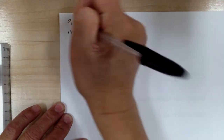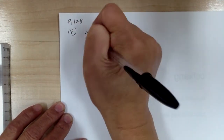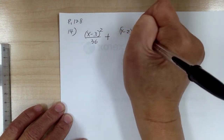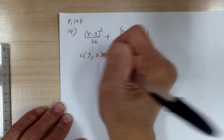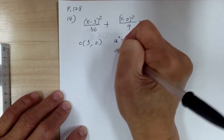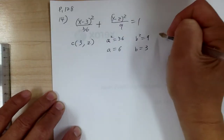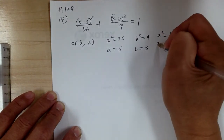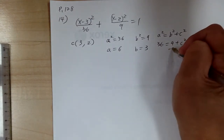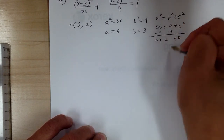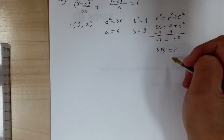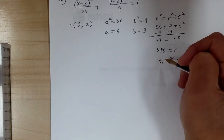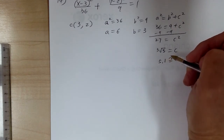Let's go to number 14. We have (x - 3)² over 36 plus (y - 2)² over 9 equal to 1. Now there's parentheses, so be careful. The center is at (3, 2). A squared equals 36, so a equals 6. B squared equals 9, so b equals 3. A squared equals b squared plus c squared: 36 equals 9 plus c squared, so c squared equals 27, c equals √27 or 3√3, approximately 5.1.